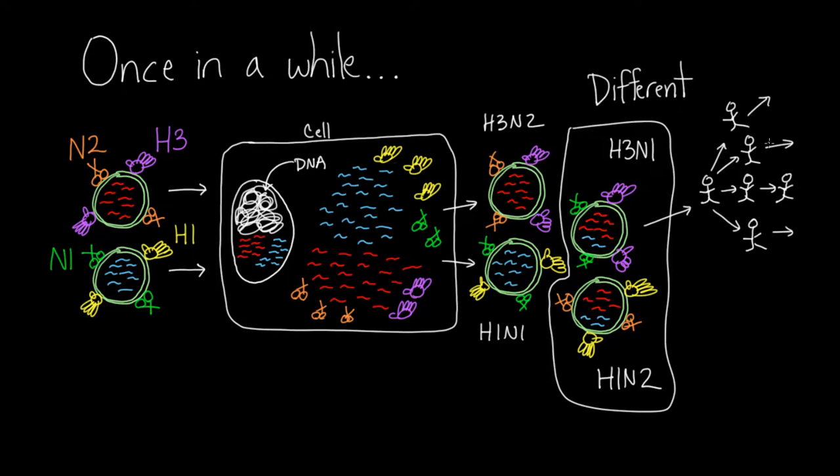And we would say, wow, in this population of people, in this community, H3N1 seems to be the dominant new virus. And that process is called genetic shift. So this process of a new virus kind of emerging after shuffling up its genes is called genetic shift.